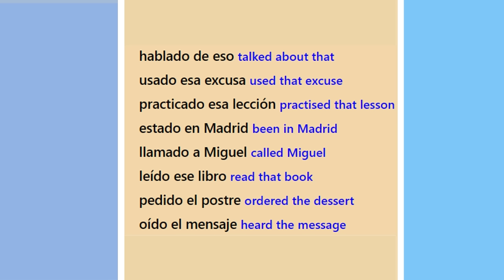We've also seen ESTADO EN MADRID — 'been in Madrid' or 'been to Madrid,' depending on context. The next verb is LLAMADO, from LLAMAR meaning 'to call.' LLAMADO A MIGUEL means 'called Miguel.' Notice the little 'a' before Miguel.